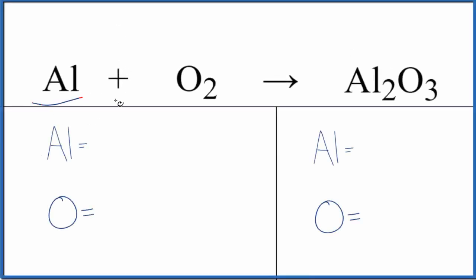Let's balance the equation for Al plus O2 yields Al2O3. We have aluminum plus oxygen gas. This is aluminum oxide. We'll also look at the type of reaction and write the states.